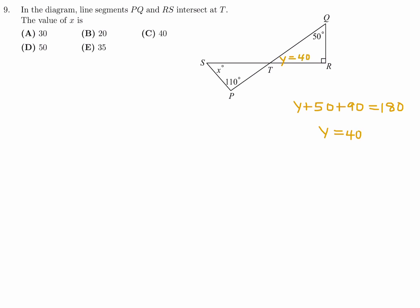By opposite angles, this is also the same as Y, so that's also 40. And now we just look at this triangle. In this triangle, X plus 40 plus 110 is equal to 180. So that means X is equal to 30. Therefore, number 9, the answer is A.